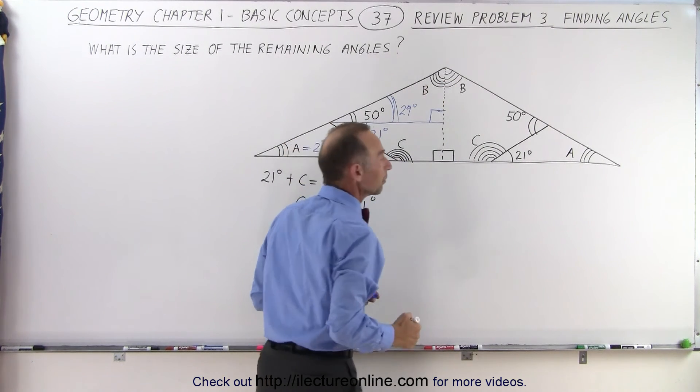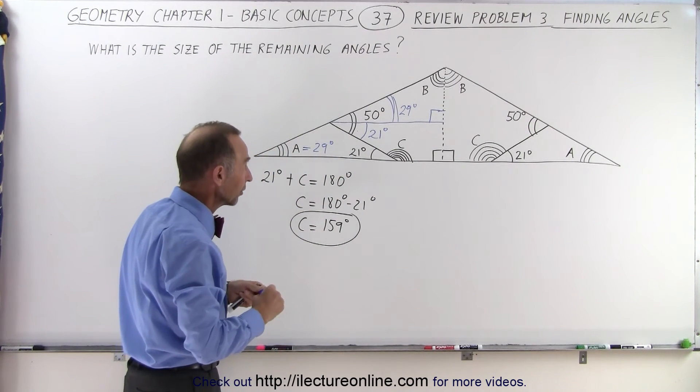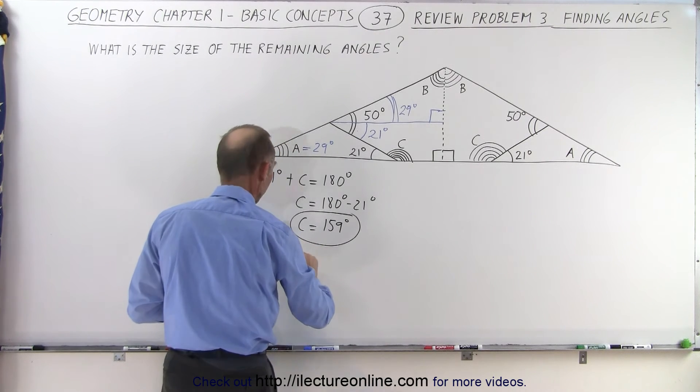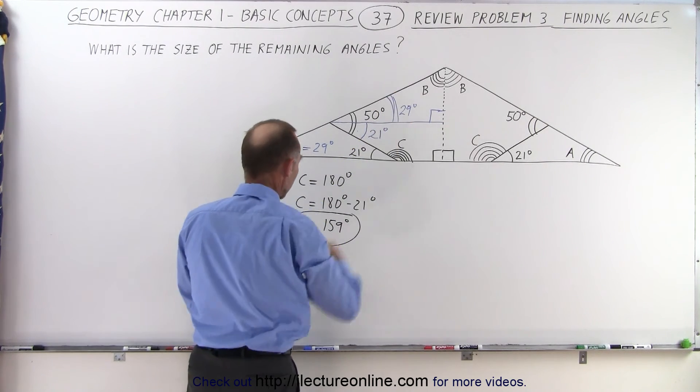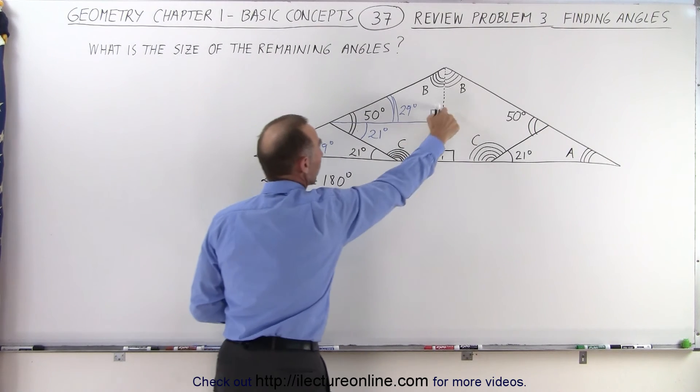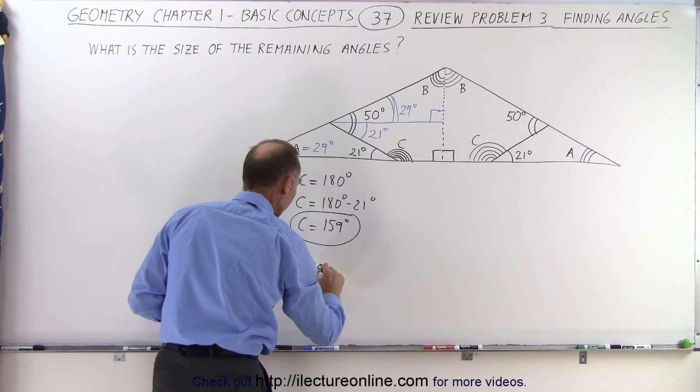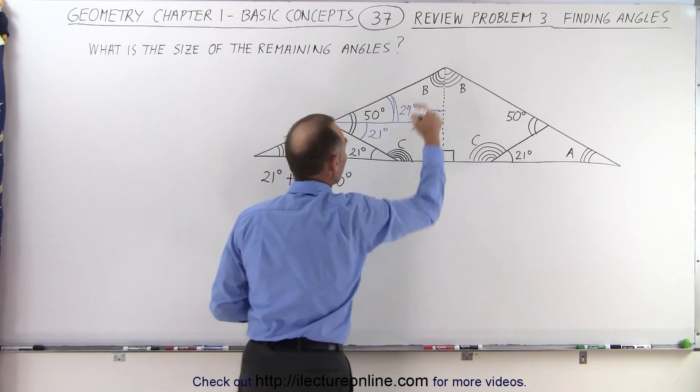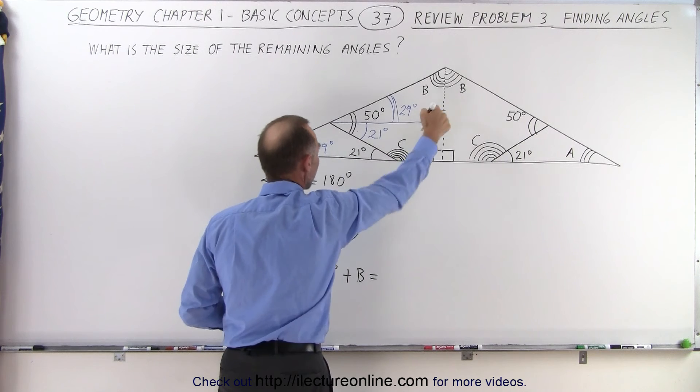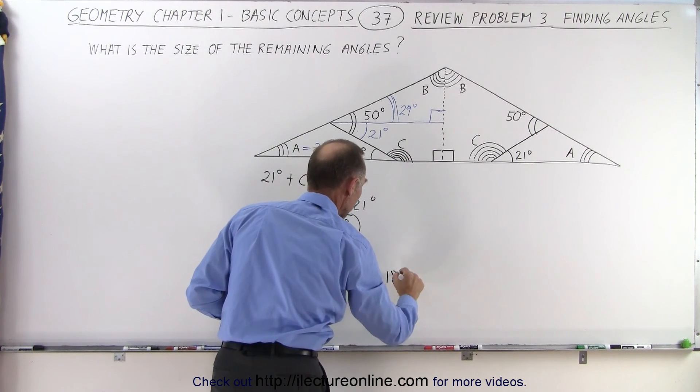And the three angles should add up to 180 degrees, the angles of any triangle. So we could say that we have 29 degrees, plus the right angle here, which is 90 degrees, plus B must add up to the three angles of a triangle, which add up to 180 degrees.